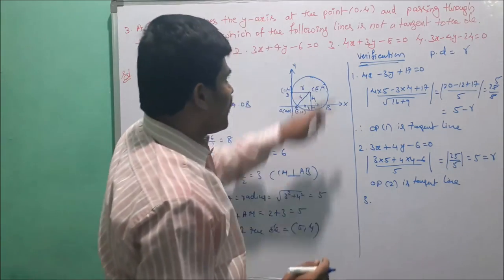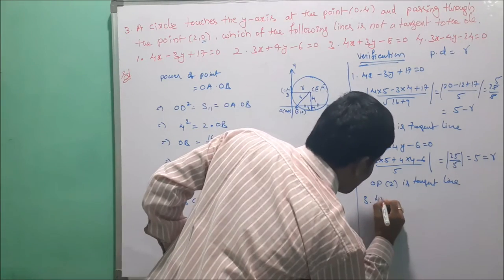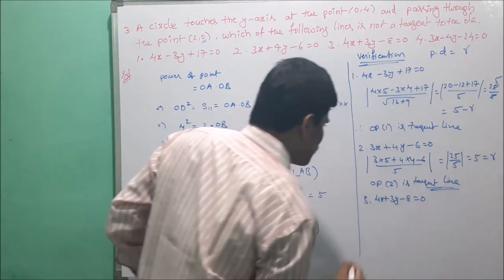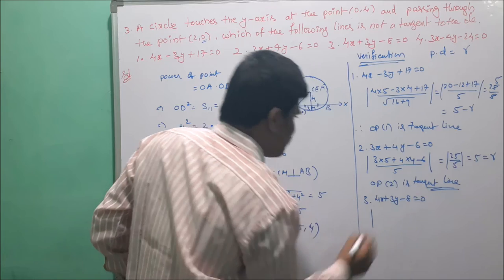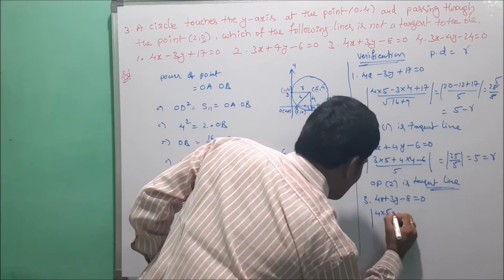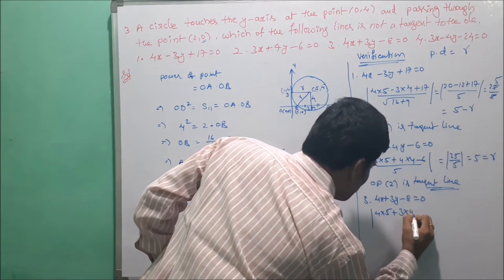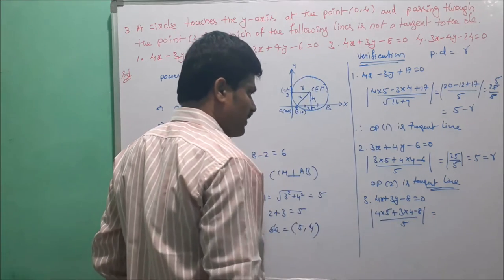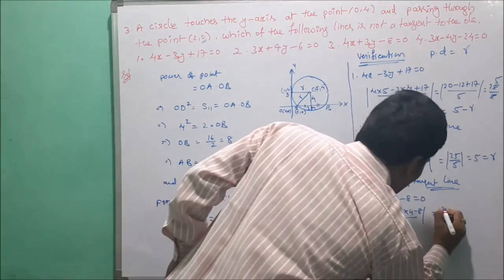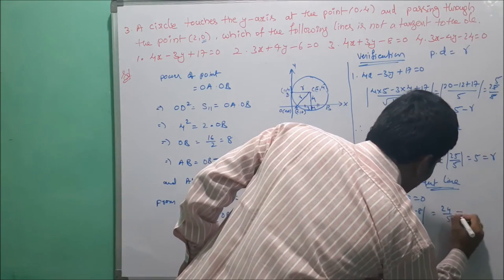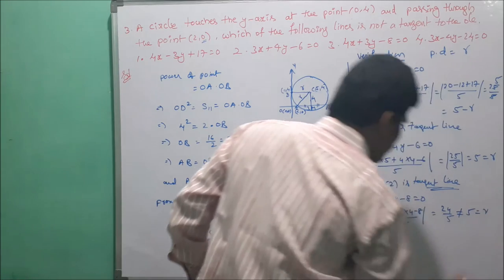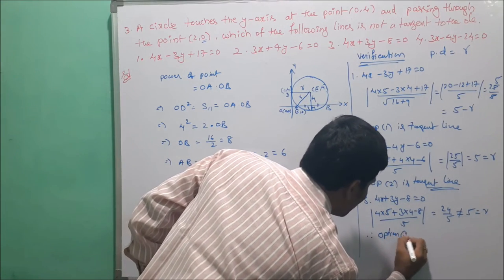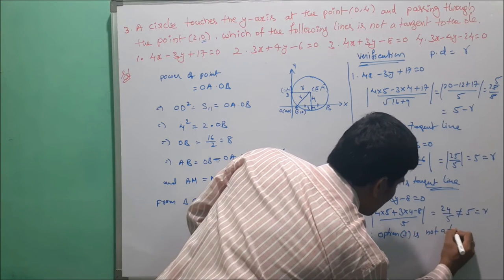Third option: 4x + 3y - 8 = 0. Perpendicular distance from (5, 4): |4×5 + 3×4 - 8| / 5 = |20 + 12 - 8| / 5 = 24/5, which is not equal to 5. Therefore option 3 is not a tangent.